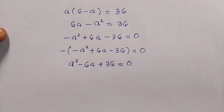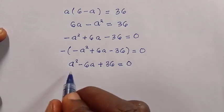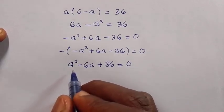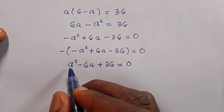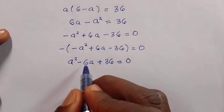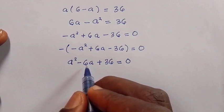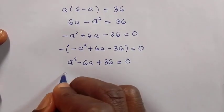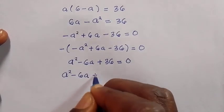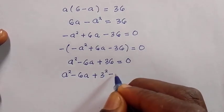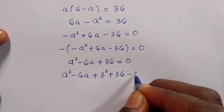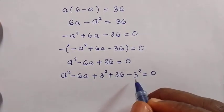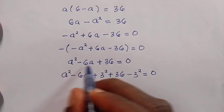We have a full quadratic equation. Rather than use the quadratic formula — to avoid confusion between the variable a and the a in that formula — we will use the completing the square method. We take the coefficient of a, divide by 2 to get 3, square it to get 9, and add and subtract 3 squared, giving us a squared minus 6a plus 3 squared minus 3 squared plus 36 equals zero.